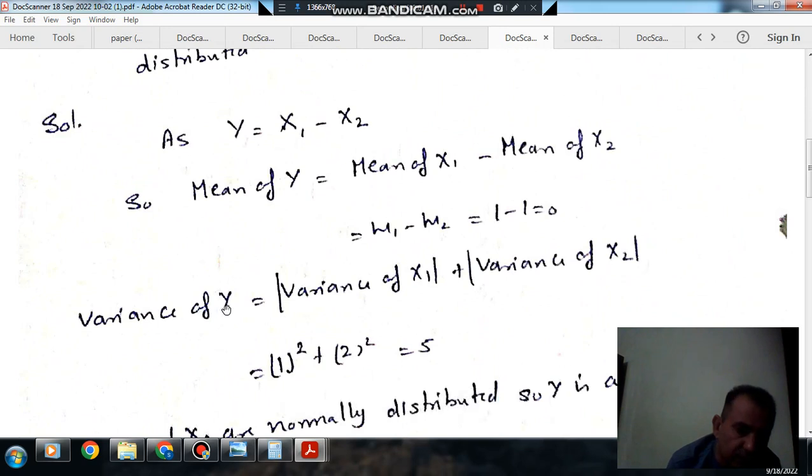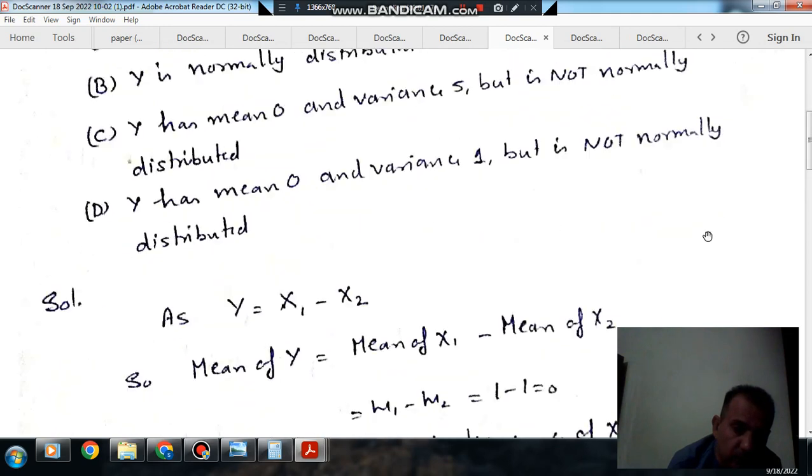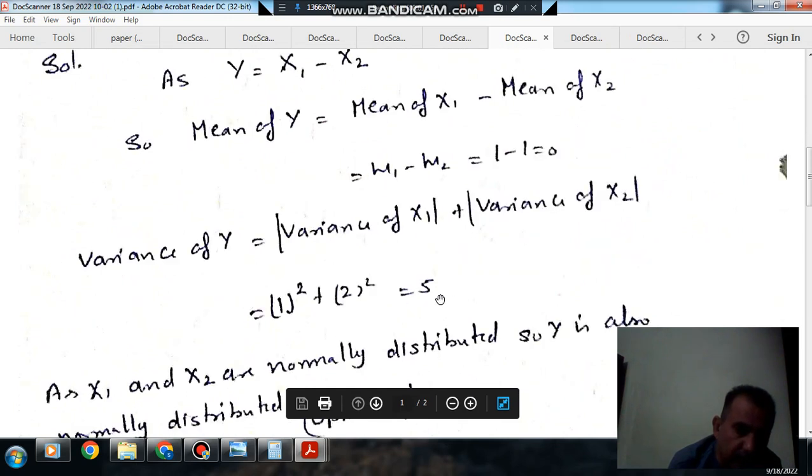Now the variance of Y is the variance of x1 plus the variance of x2. Variance of x1 is 1 squared and variance of x2 is 2 squared. So variance of Y is 5.